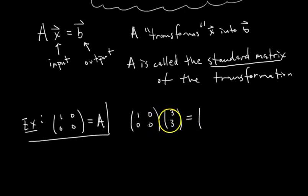Well, if you remember, this is just a linear combination of the columns of A, where these are your weights. So you do 3 times the vector 1, 0, plus 3 times the vector 0, 0. And what do you get as your output vector? You get 3, 0.